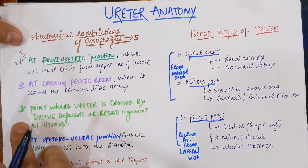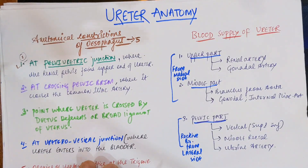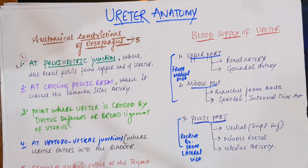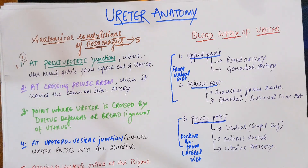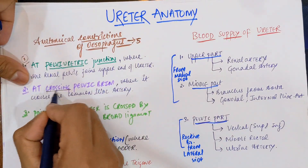The second constriction occurs at the crossing of the pelvic brim — when the ureter enters the pelvic inlet and crosses the pelvic brim. This area also corresponds to where the ureter crosses over the common iliac artery. At that crossing point there is the second constriction.